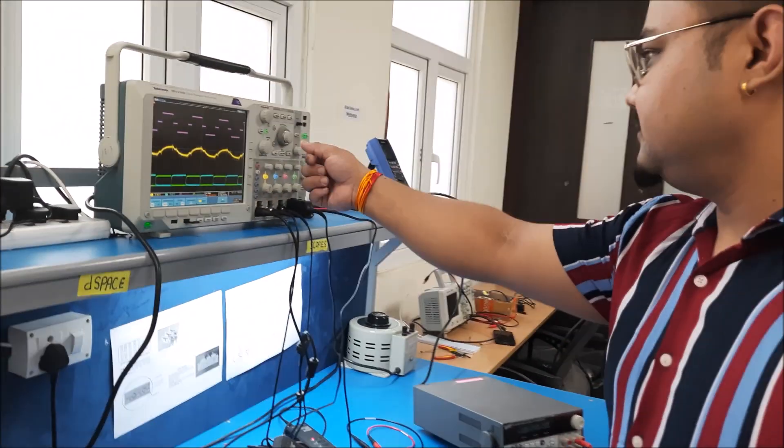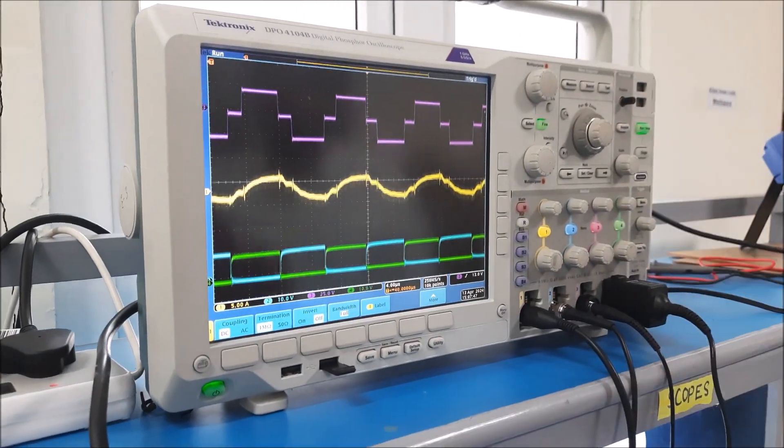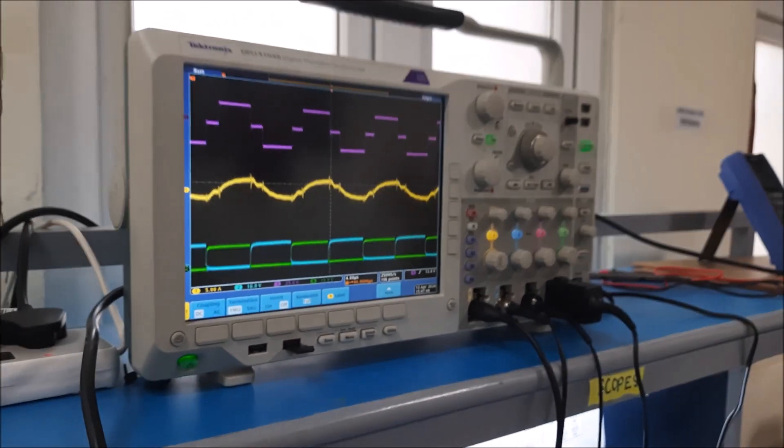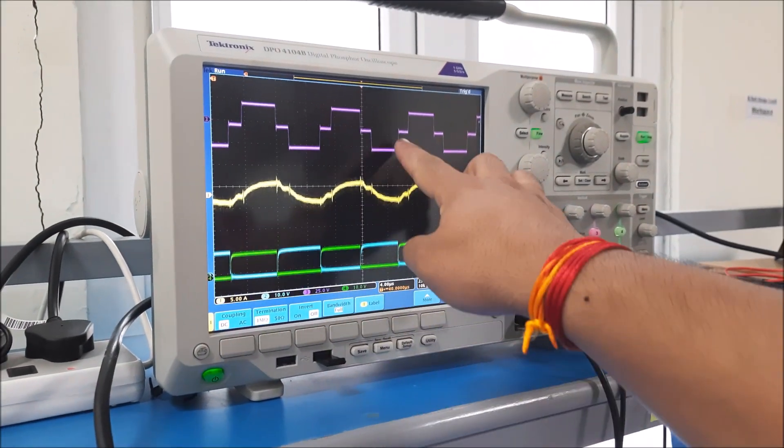And now you can see the output. The pink one is our inverter output. Our DC link voltage is 24 volts, so the output is about plus minus 24 volts. You can see here, the pink one.